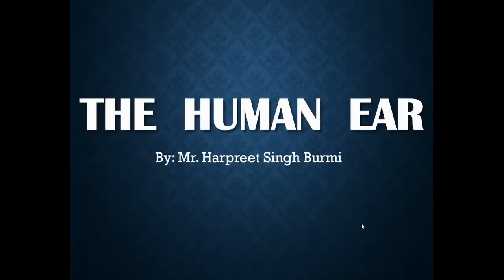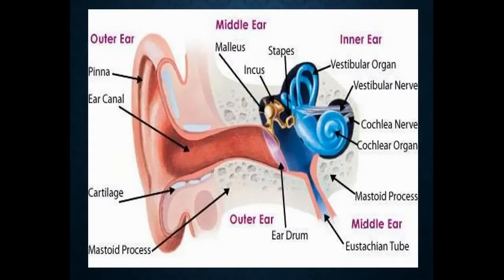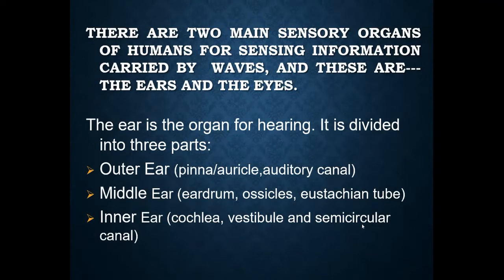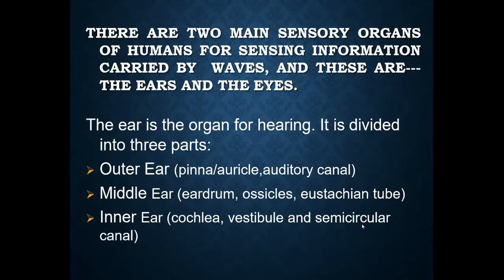Hello students, today we will start with the second sensory organ, that is the human ear. This is the anatomical structure of the human ear. You can see the various parts like the outer ear, middle ear, inner ear, and so many cartilages and canals. There are mainly two sensory organs of the human body which work on information carried by waves. The one we already covered is the eye, and now the second one is the ear.